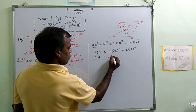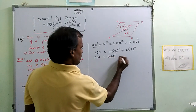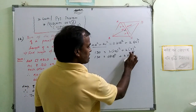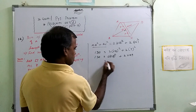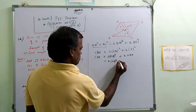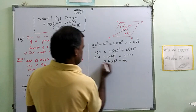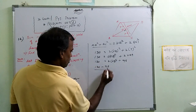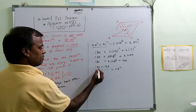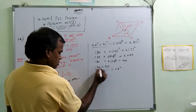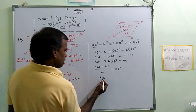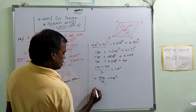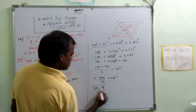So 130 equals 2·OB² plus 2 into 49. That is 130 equals 2·OB² plus 98. Therefore 2·OB² equals 130 minus 98, which is 32. So OB² equals 32 divided by 2 equals 16. Taking square root, OB equals 4.